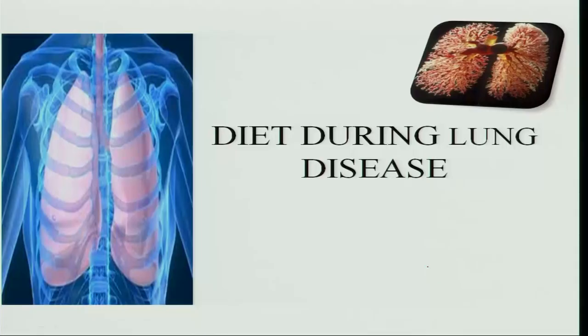Today we will be seeing the disorders of the lungs. Lungs are the most important and vital part of the body, helpful in respiration. There is intake of oxygen and carbon dioxide is exhaled through the respiratory tract. When the airways get inflamed and the air sacs get disordered, it leads to disease. Let us see what type of diet we have to take in lung disease.